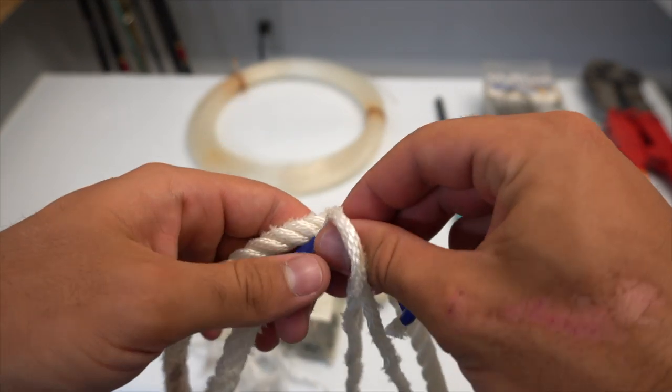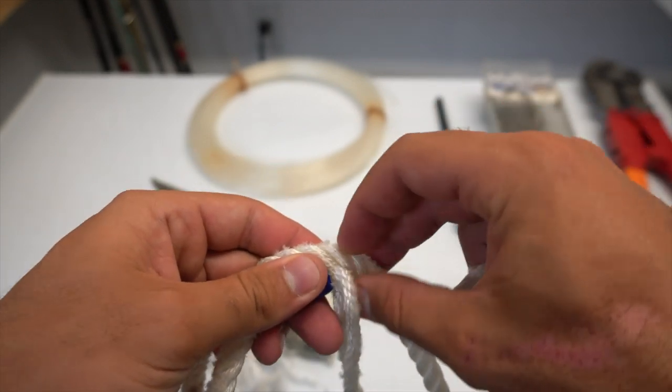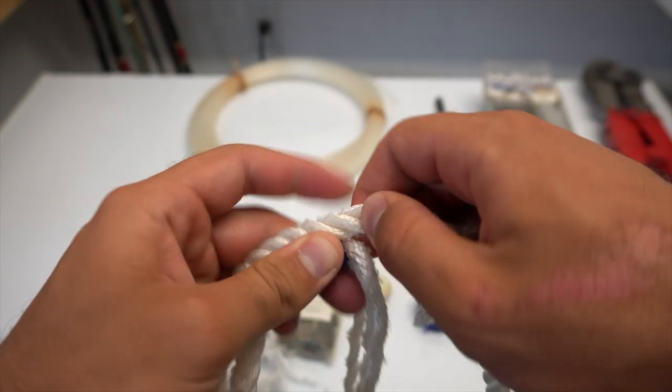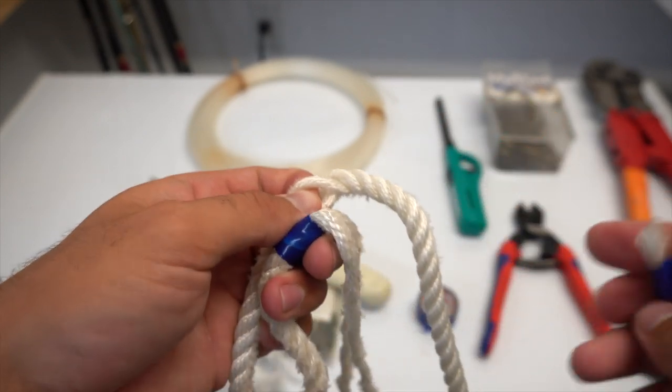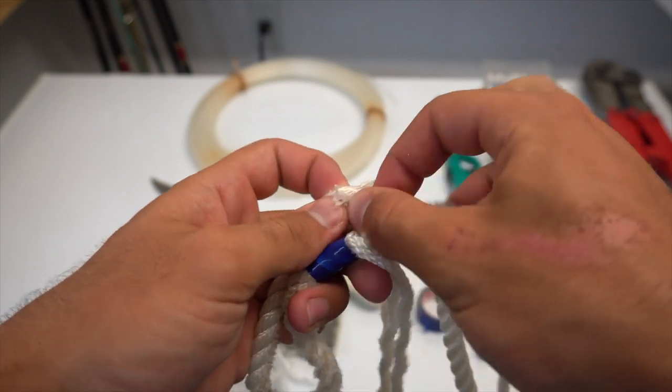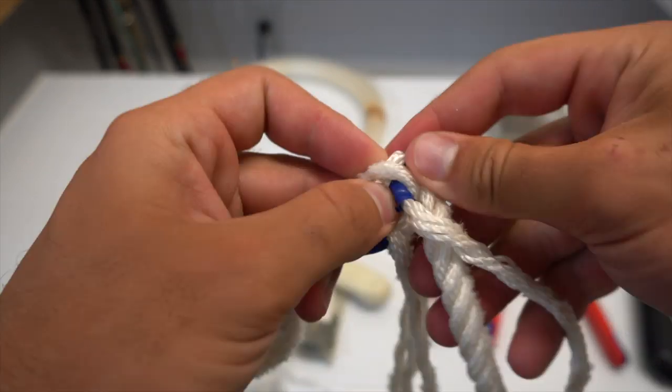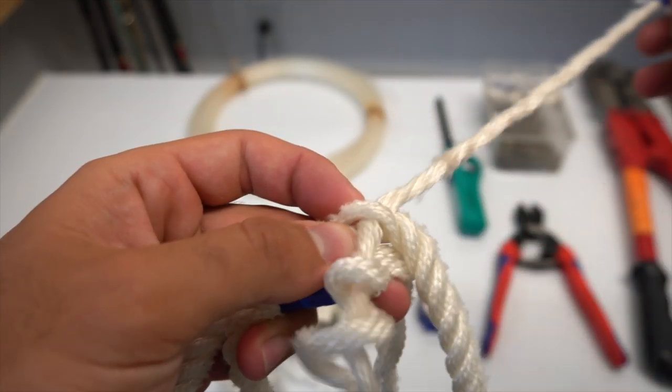It is pretty much just braiding the three strands back into the rope in the opposite direction to create kind of like a Chinese finger trap effect. How you start is you slightly unravel one of the strands from the rope just enough to make a gap. You then take one of the loose strands and braid it through that gap.